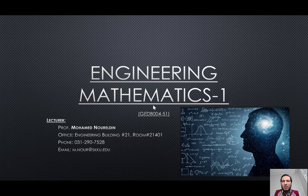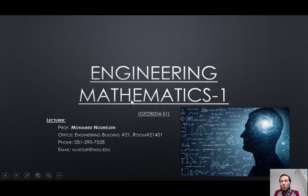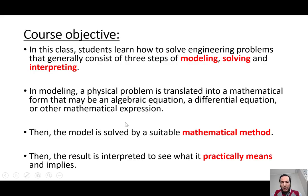Our class, Engineering Mathematics One, is coded GEDB004-51. We have two classes here: Engineering Mathematics One and Engineering Mathematics Two, so you need to be sure that you are choosing the one that is suitable for you.